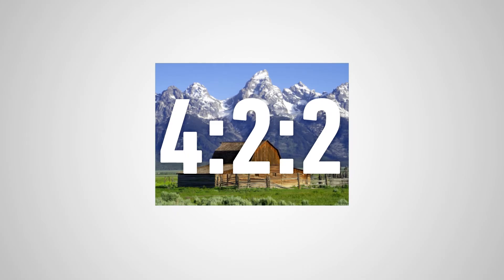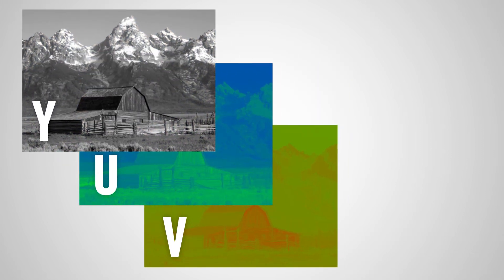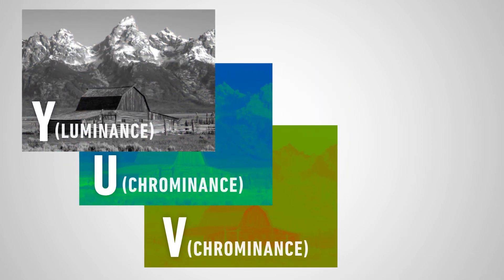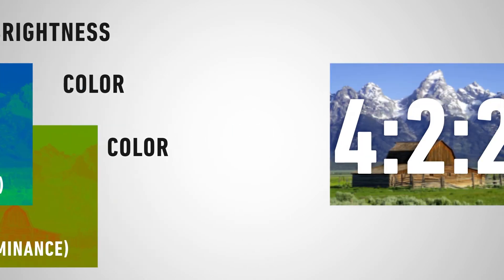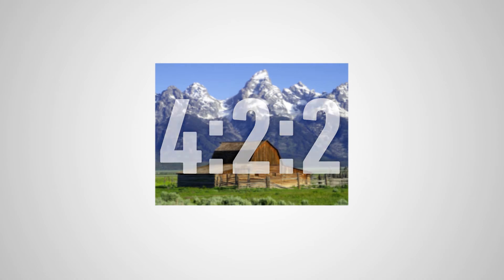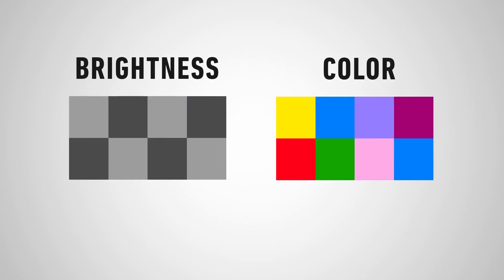What does 4:2:2 mean anyway? It's a representation of the YUV color space, which basically represents the brightness and color values of an image. Let's say we're looking at a 4-by-2 pixel region of an image, and we separate this region into brightness and color information. The numbers define how much information will be captured by the color sampling.